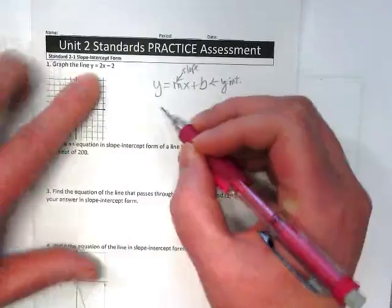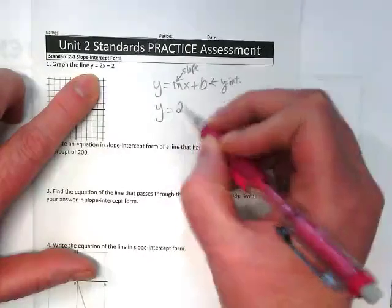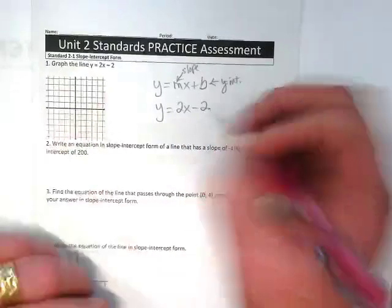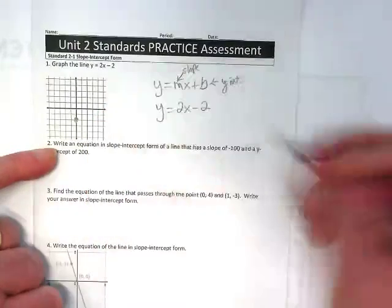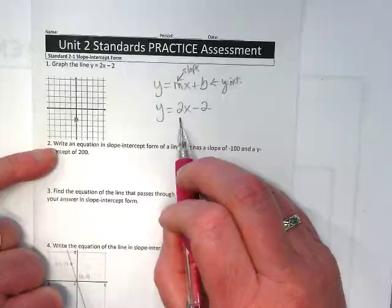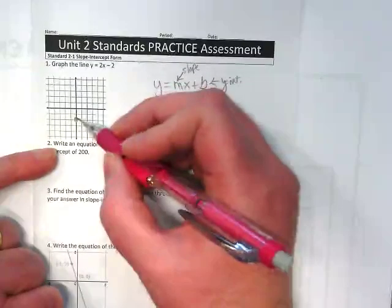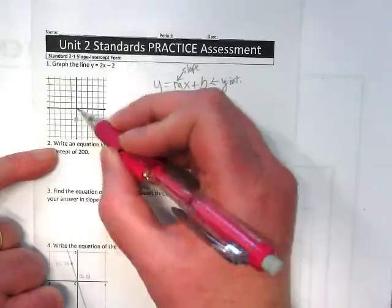So when I have the equation y equals 2x minus 2, I'm going to start with the y-intercept and graph it at negative 2 on the y-axis, and then I'm going to use my slope to find another point. My slope is 2, so that's 2 up and 1 over.